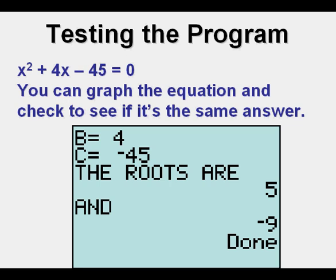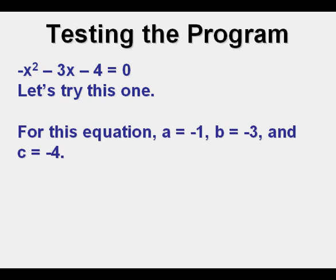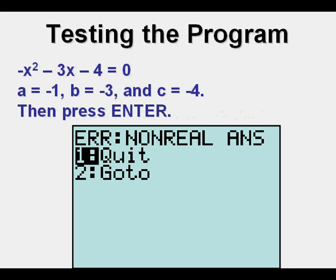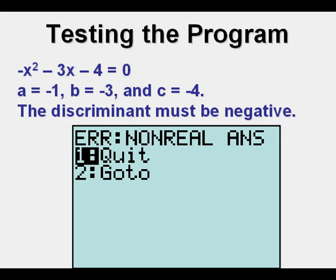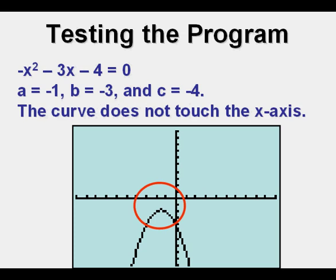You can easily graph the equation as a function to see if you get the same answer. Let's try another one: negative x squared minus 3x minus 4 equals 0. For this equation, a equals negative 1, b equals negative 3, and c equals negative 4. Enter those values in the program. This error message — non-real answer — means no real solutions. For there to be no real solutions, the discriminant, b squared minus 4ac, must be a negative number. We can check by graphing: enter the equation in the y equals menu, press the graph key, and we see that the curve does not touch the x-axis, so there's no real solution, just as the program told us.